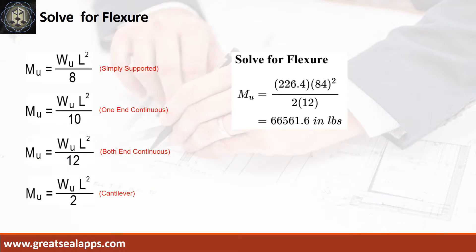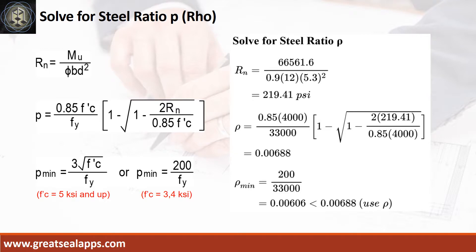Given factored load equals 226.4 pounds per square foot and L equals 7 feet, the maximum moment MU is 66,561.6 inch-pounds. Given MU equals 66,561.6 inch-pounds, resistance factor equals 0.9, B equals 12 inches, and D equals 5.3 inches, the beam design ratio RN equals 219.41 PSI and reinforcement ratio rho equals 0.00688.